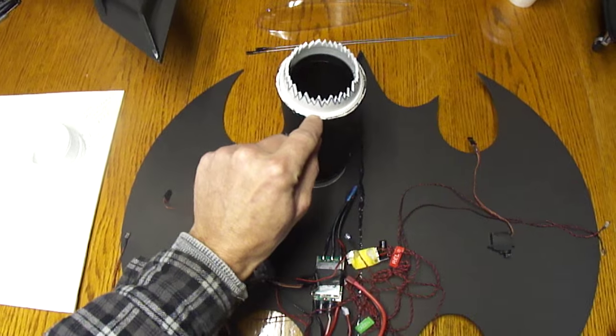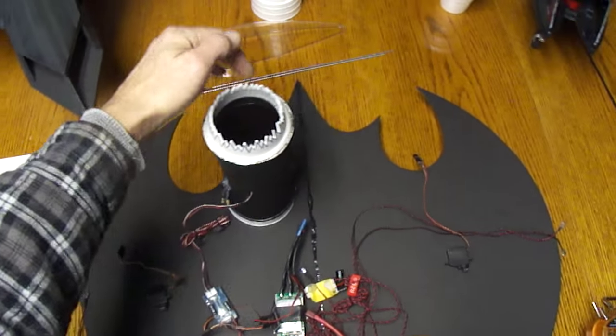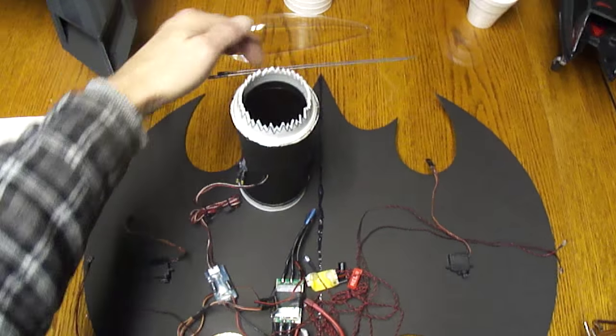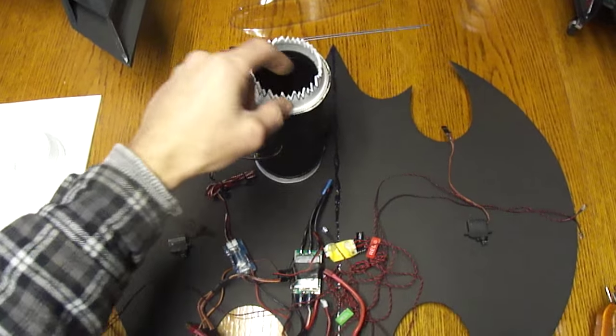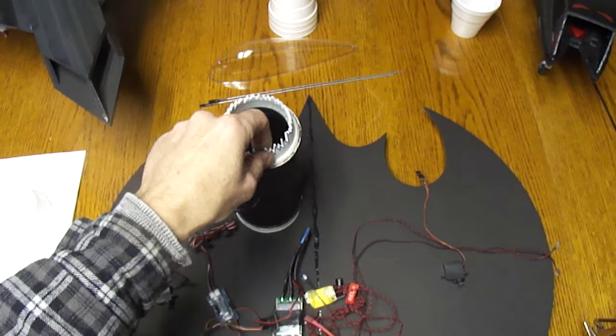And for the foam cup, I'm just going to put four little hot glue spots right around the rim here. That way if I ever want to peel this cup out and put a different one, anything gets broke.